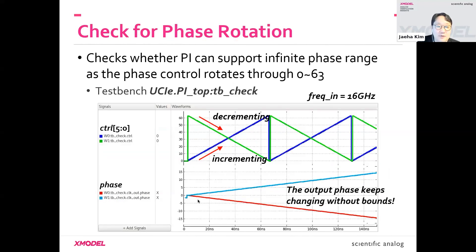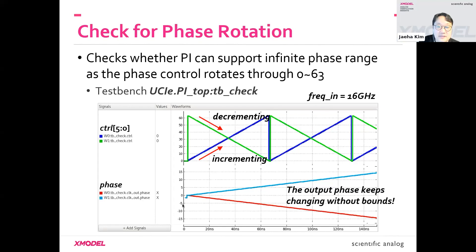Here are the quick simulation results. We sweep the control code from 0 to 63 and repeat that process in the incrementing or decrementing direction. Because our phase interpolator spans a whole 360 degrees, the output phase keeps increasing or decreasing without bouncing. This is why phase interpolators are so cool.